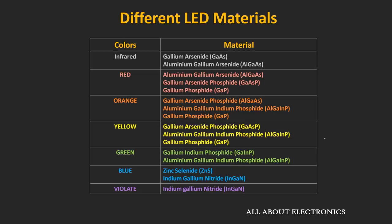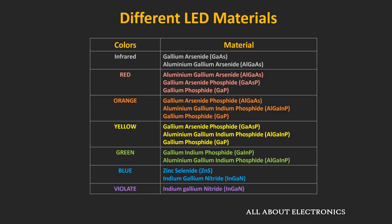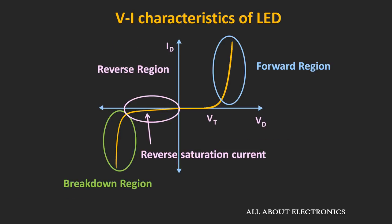Here is the list of different semiconductor compounds which are used to generate the different colors of light. Now if we talk about the electrical characteristic of the LED, then it is very similar to the P-N junction diode. And if you see the VI characteristic of the diode, then it will be very similar to the rectifier diode.